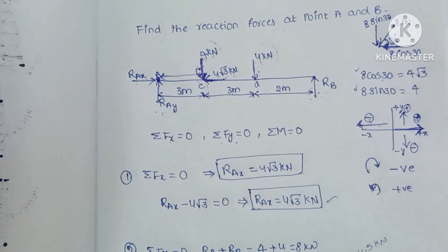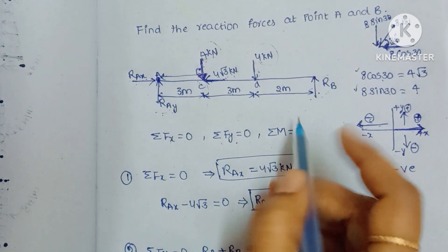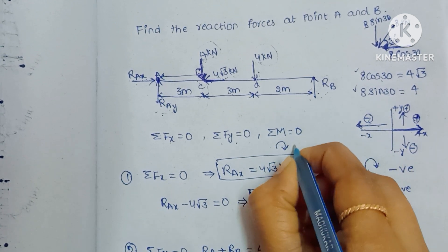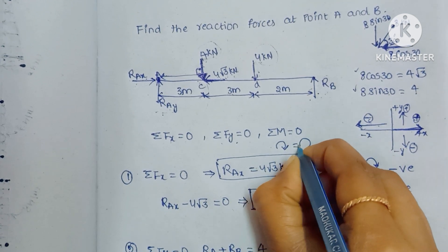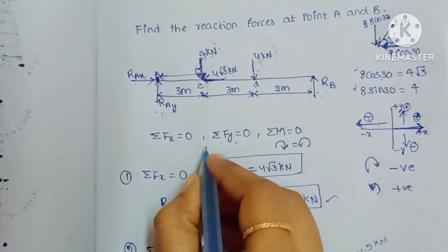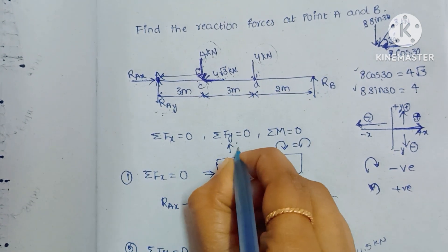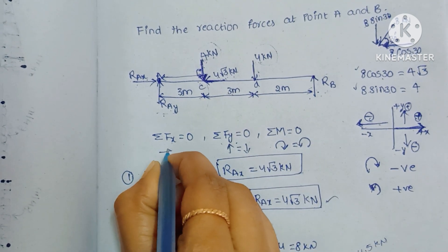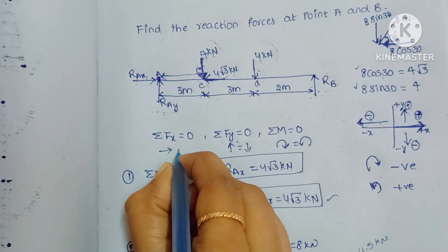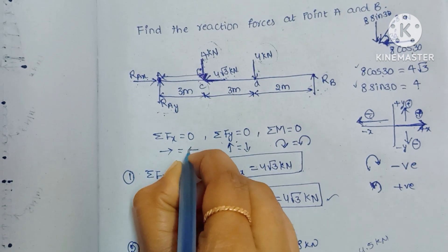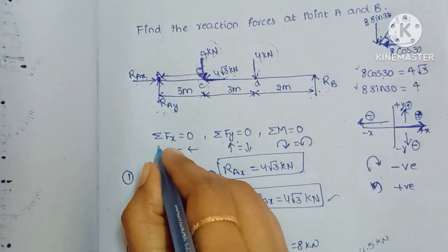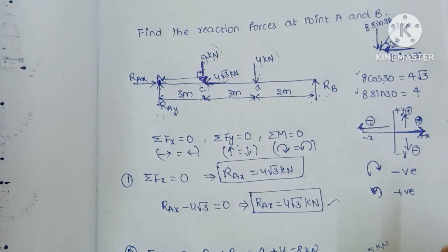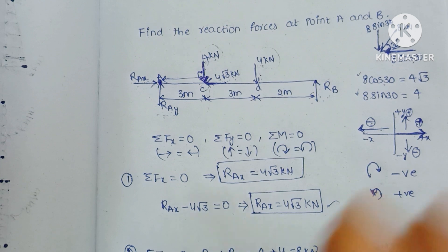Similarly for moments: sum of clockwise moments equals sum of anticlockwise moments. In this way you can solve problems without worrying about sign conventions. If you represent the free body diagram at the end of your solution with the RA and RB values, you will make a good impression in the exam. Please like, share, and subscribe to my channel. Thank you for watching.